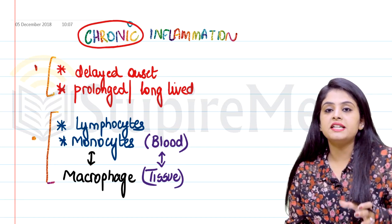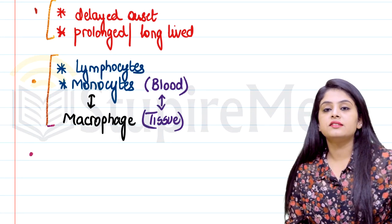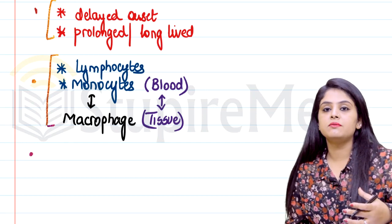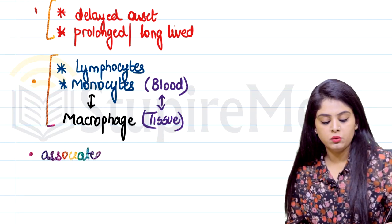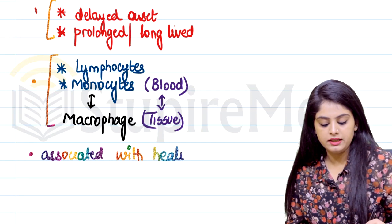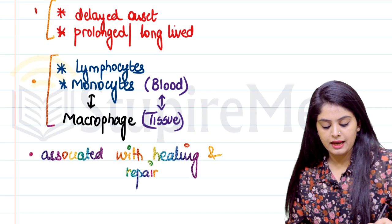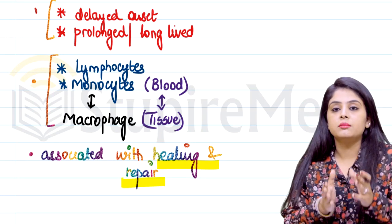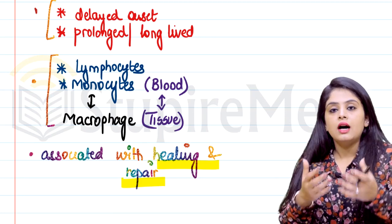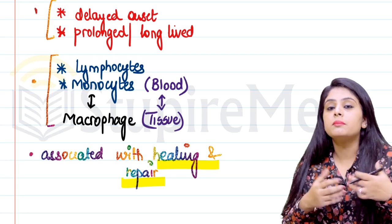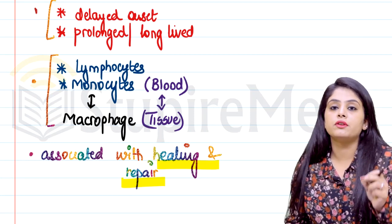The definition which most students tend to leave incomplete is incorrect because there is one more aspect that should be added. Yes, chronic inflammation will go on for a very long time, will have lymphocytes and monocytes — but after the inflammation is over, it will also be associated with healing and repair. Whatever damage the inflammation caused, the body also takes the initiative of repairing that damage. This is the part of the definition that is often ignored but is very important for conceptual understanding.